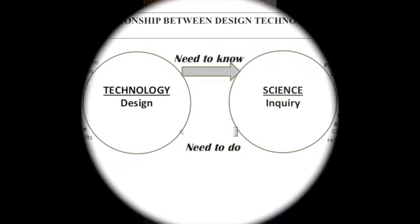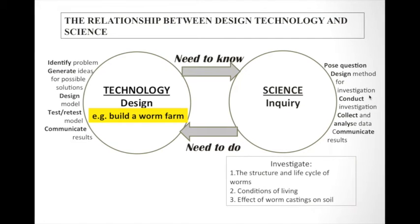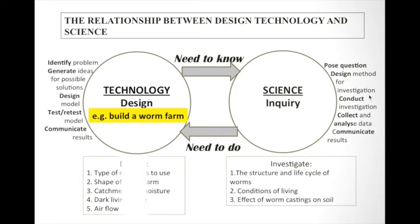As an example, in building a worm farm, what students will need to know is they will need to investigate and find out about the structure and the life cycle of worms and the conditions of living for the worms. In technology, they will explore the type of materials to use and the shape of the worm farm, and then they have to consider factors such as drainage because worms do not like to live in conditions that are too wet.